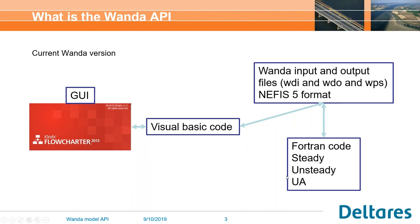Next to that, we have the calculation core, which is basically Fortran code, in which we have a steady and unsteady executable. For the parameter script, we have an executable that reads the input file, does the calculations, and puts the results back in the WDO file, which is basically the output file. This is how it is structured now, and we'll keep this so that the current user interface can still be used.